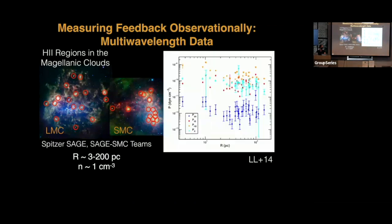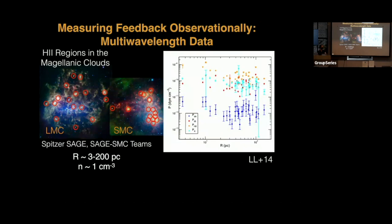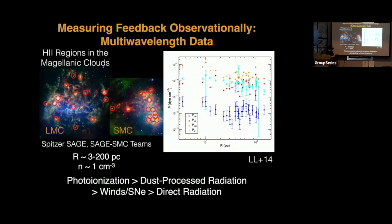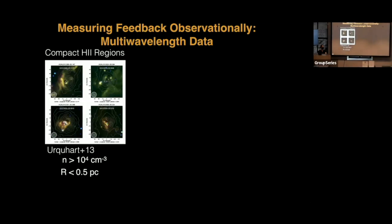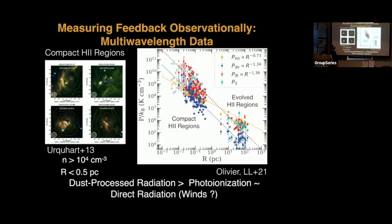We initially did that analysis almost a decade ago and measured the pressures associated with these four terms for 32 sources in the Magellanic Clouds, with radii of 3 to 200 parsecs and density of about 1 particle per cc. We found that in general the photoionization heating — the warm gas pressure — dominated at 80% of the total pressure. The dust-processed radiation and winds/supernovae contributed about 10%, and the direct radiation pressure only contributed about 1%. Then Grace Olivier analyzed compact HII regions in the Milky Way and found very different results: for these much younger, smaller sources still in high-density media, the dust-processed radiation actually dominates over photo-ionization heating and direct radiation.